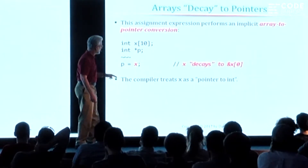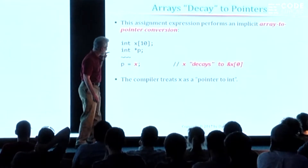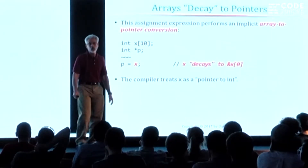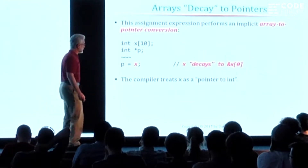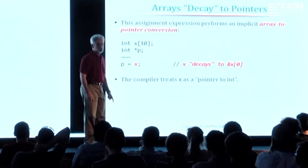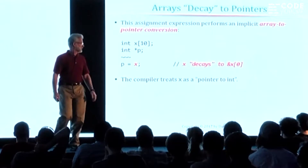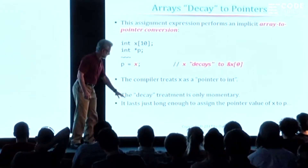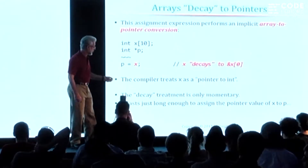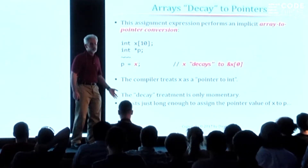When you write an assignment expression that says pointer P is assigned the value of X, the compiler will look at this and say, that's a pointer, but that's an array. You can't take an entire array and stuff it into a pointer — it just doesn't fit. So what do you do? The compiler applies a type conversion to that operand and transforms it from an array into a pointer for the purpose of evaluating that expression. And this is really important: the transformation is not a permanent transformation, it's temporary.